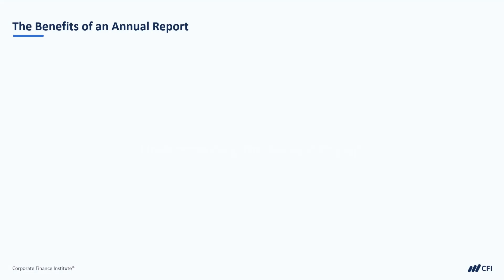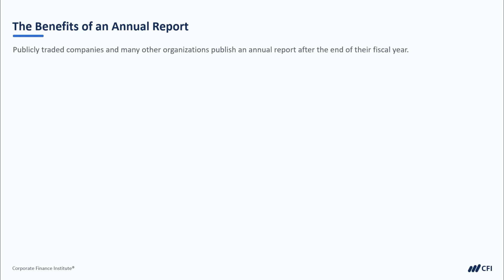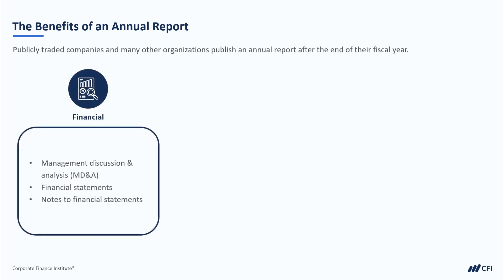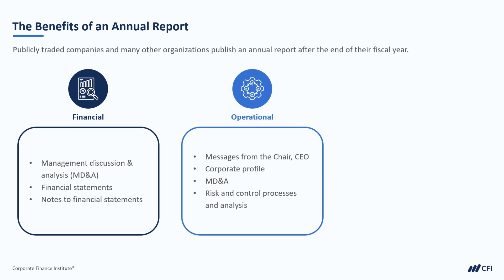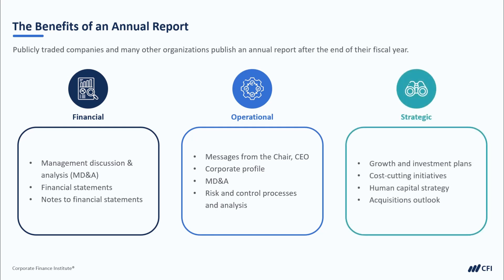Let's start high-level by looking at some of the benefits of an annual report. Publicly traded companies and many other organizations typically publish an annual report after the end of their fiscal year. That annual report contains a huge amount of significant financial and non-financial information. We'll find financial information in the Management Discussion and Analysis section, or MD&A. We'll also look at the three financial statements, and we'll use the notes to the financial statements. But we can also use the annual report to gain operational understanding and insights into a company — by reading the message from the chair, a message from the CEO, the corporate profile, the MD&A, and risk and control processes within the company.